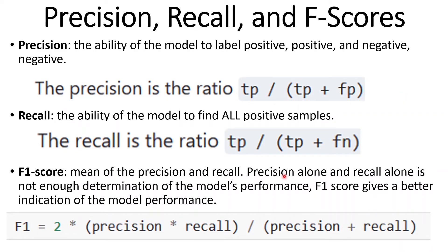Precision, recall, and F1 score. Precision is the ability of the model to label positive values as positive and negative values as negative. Recall is the ability of the model to find all the positive samples. F1 score is the harmonic mean of precision and recall — precision alone or recall alone is not sufficient to determine a model's performance, so we use F1 score to give us a better indication. A separate video goes into more detail on these metrics.